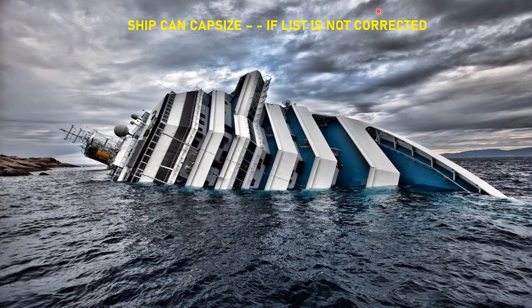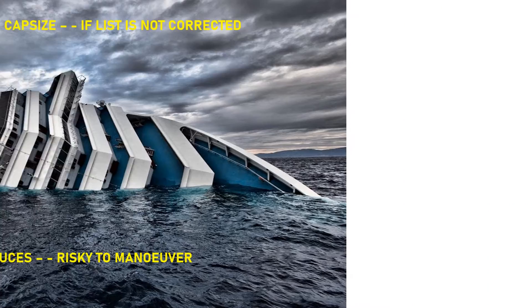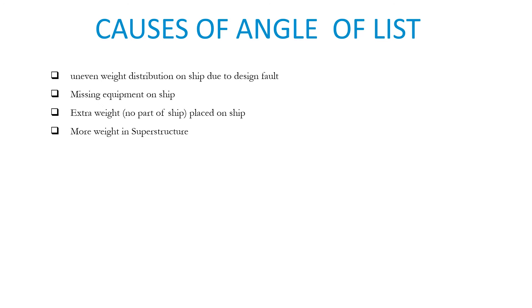A ship can capsize if the list is not corrected. Speed reduces and it becomes risky to maneuver. Here are the causes of the angle of list in a ship — I have told you this before, but this is a general description which you can read.